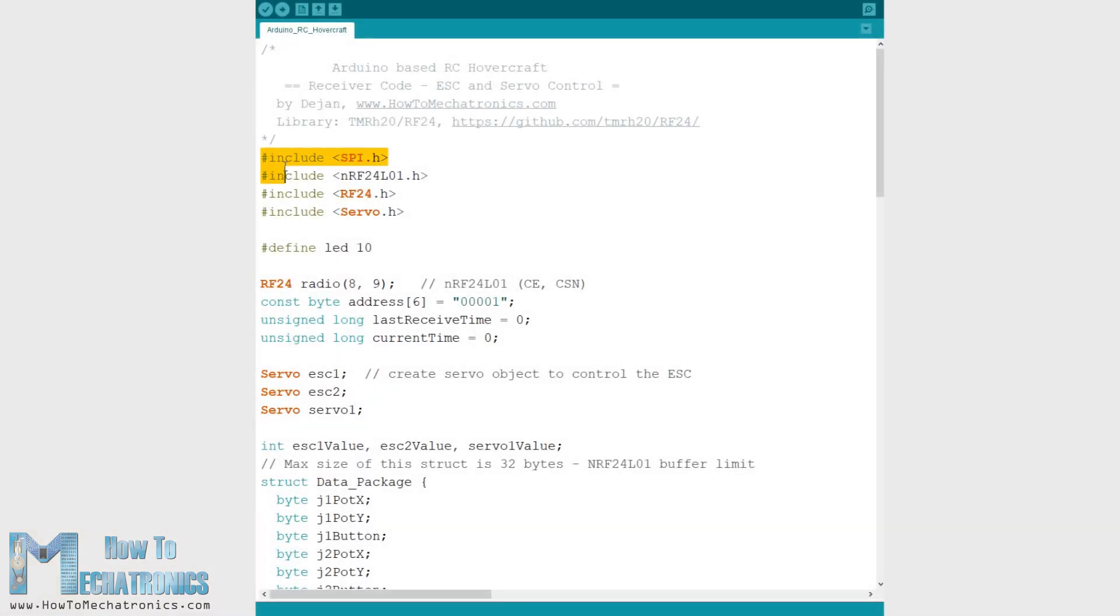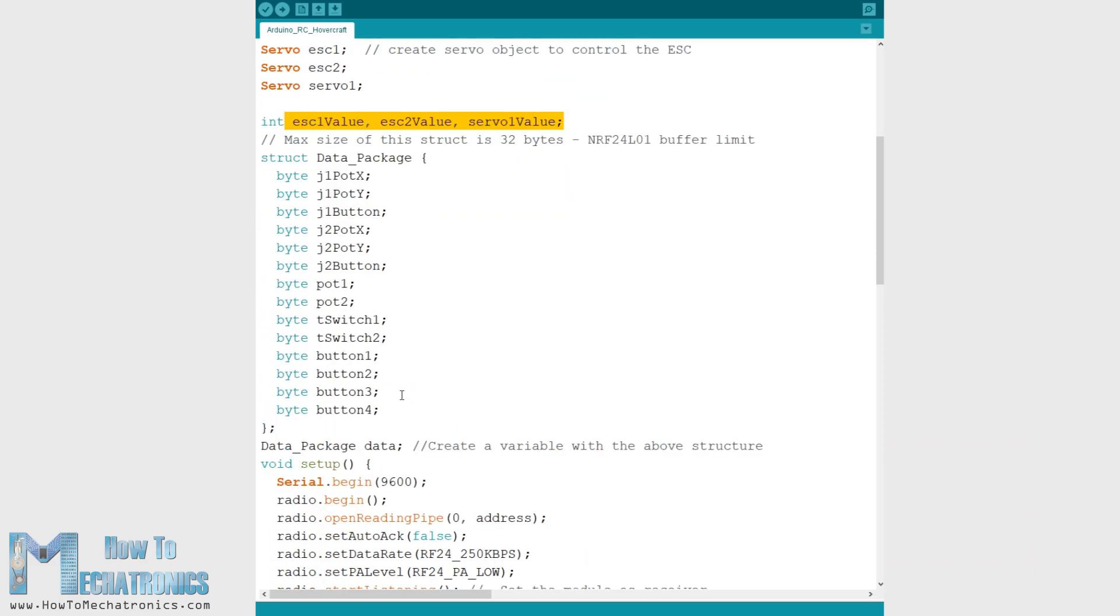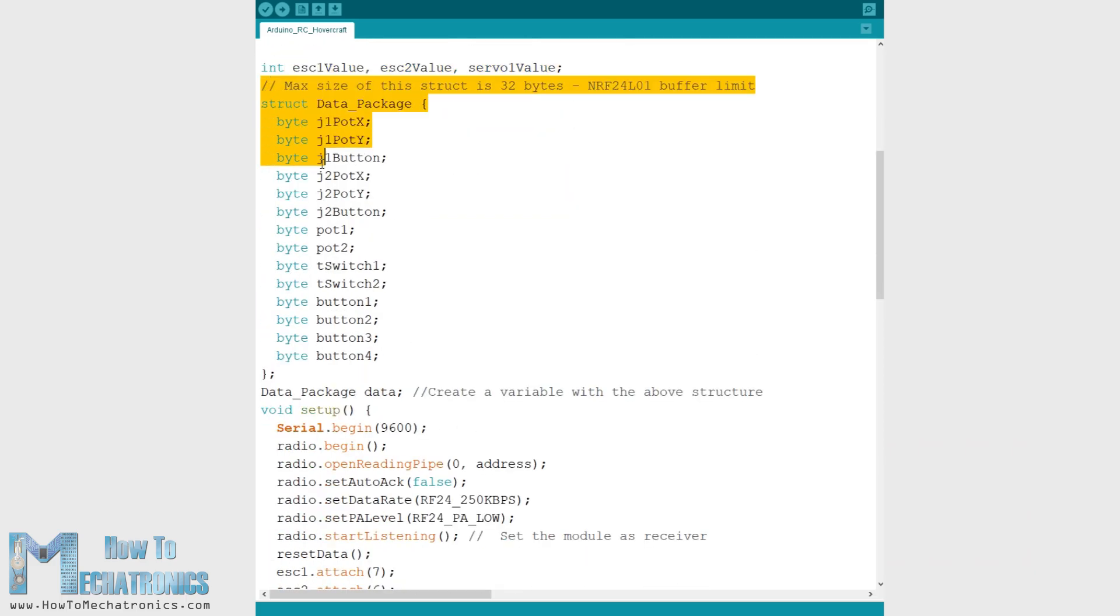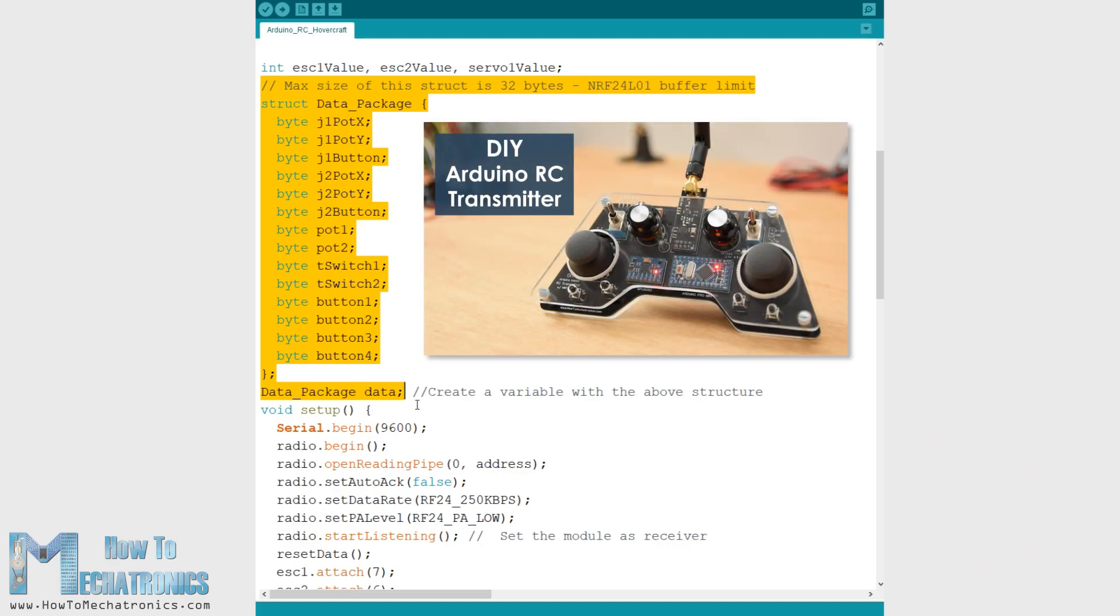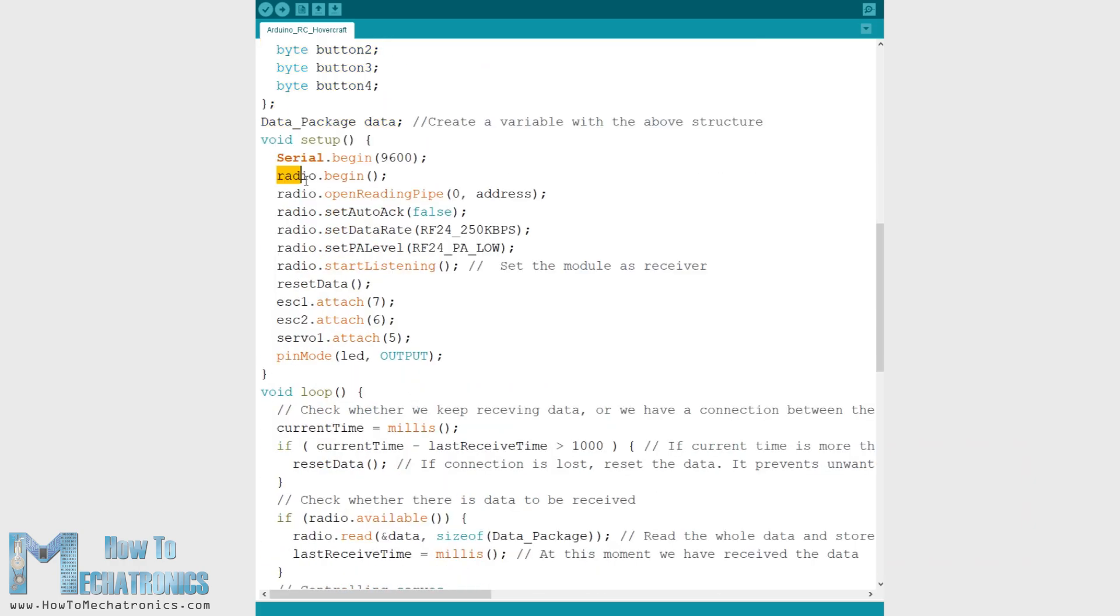So first we need to include the RF24 library for the radio communication as well as the servo library for controlling both the servo and the brushless motors. Then we need to define the radio and the servo objects, some variables needed for the program below, as well as the structure of variables which are used for storing the incoming data from my DIY RC transmitter. For more details how this communication works, I would suggest to check my particular tutorial for it. In the setup section we need to initialize the radio communication as well as define the pins to which the servo and the ESCs are connected.